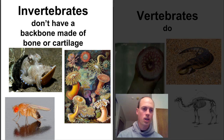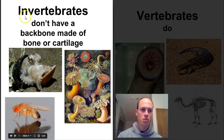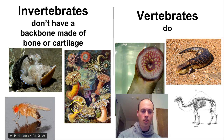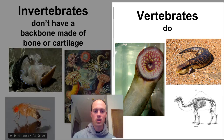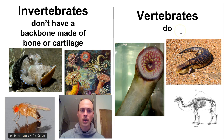I like to think of animals in two major groups. The first being invertebrates — those are the ones that do not have a backbone made of bone or cartilage. Some of these animals are more well known than others. We'll take a look at invertebrates first and then focus on vertebrates in a later video.